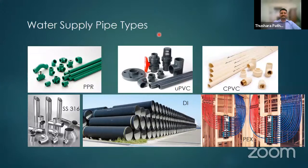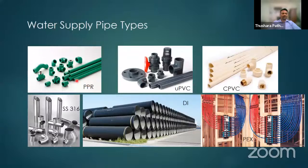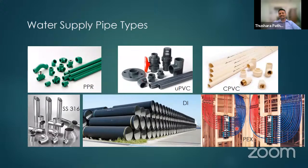There are many types of water supply pipes for both cold and hot water: PPR (polypropylene random) pipes for hot and cold water; uPVC generally for cold water; CPVC for both; SS316 stainless steel and ductile iron for cold water supply — mainly for municipal water supply systems; and PEX pipes, which are flexible pipes used in risers to connect sanitary appliances. These cover the main pipe types used in plumbing systems.